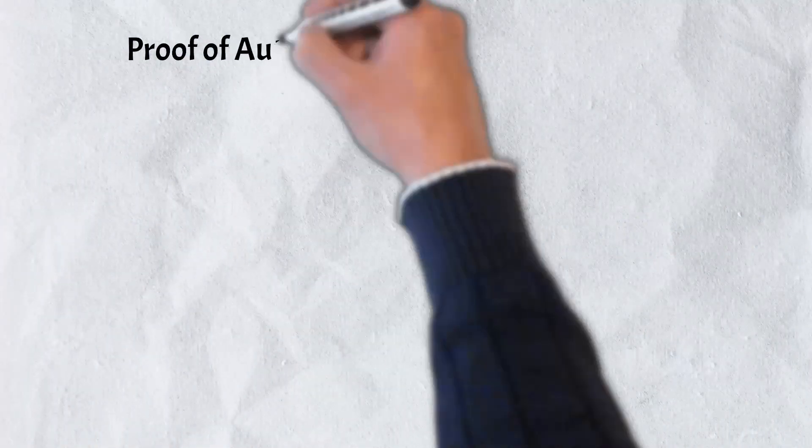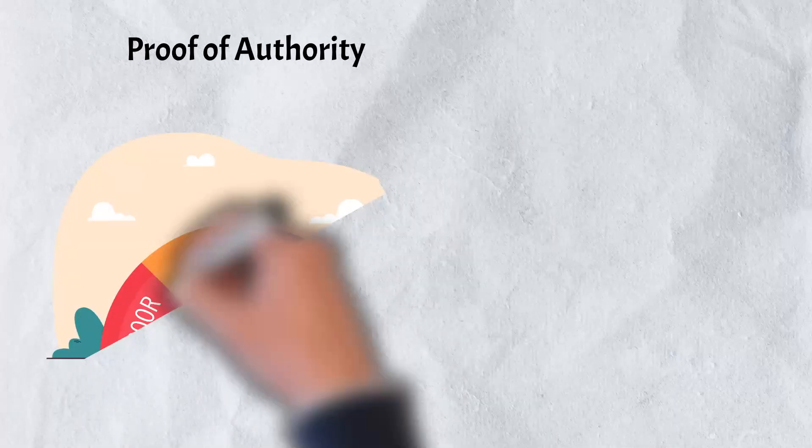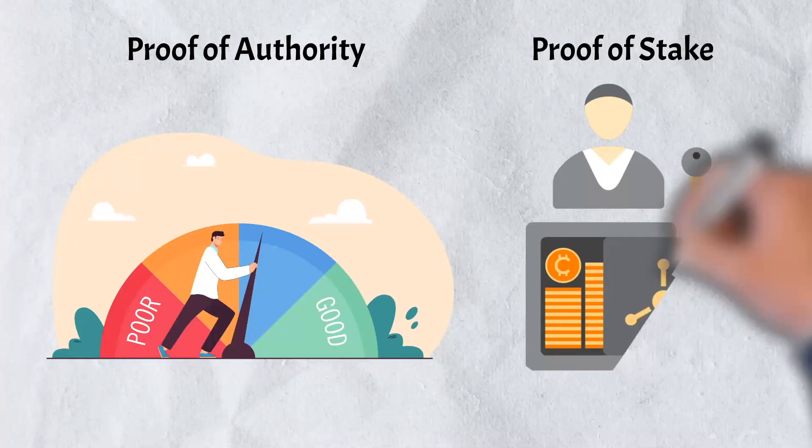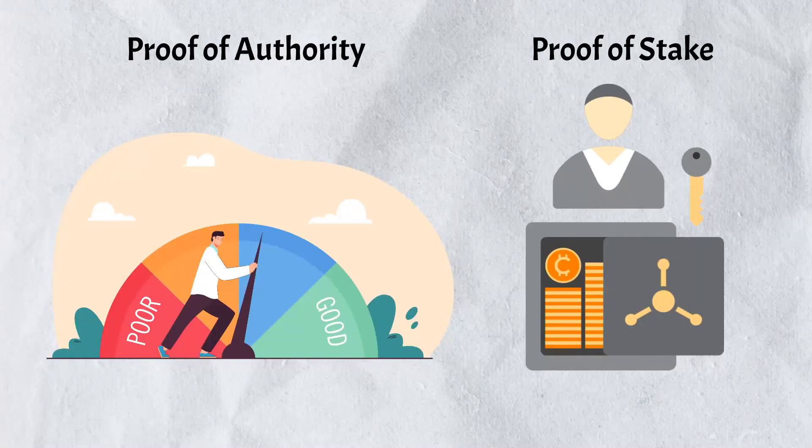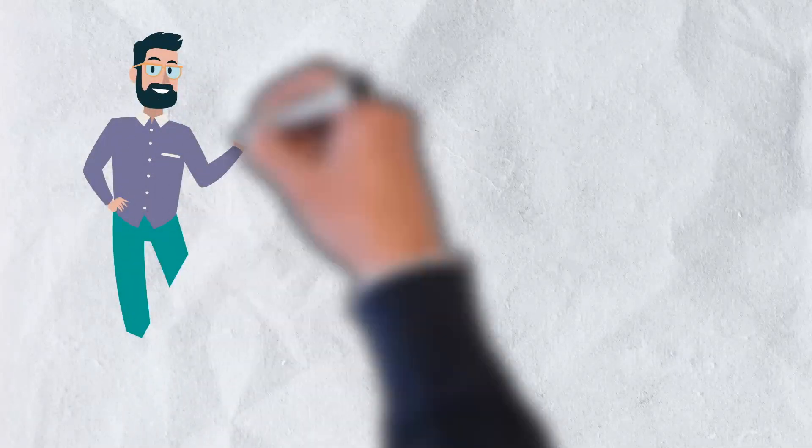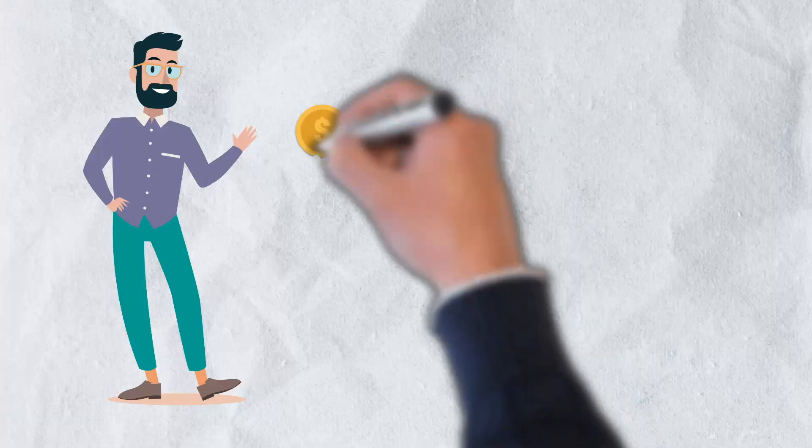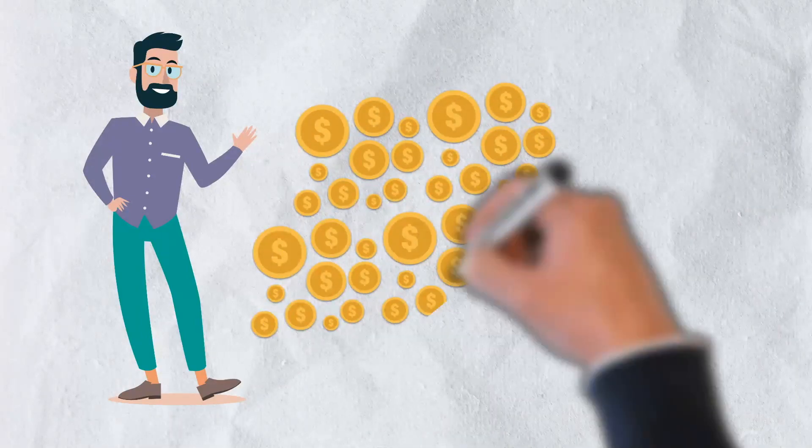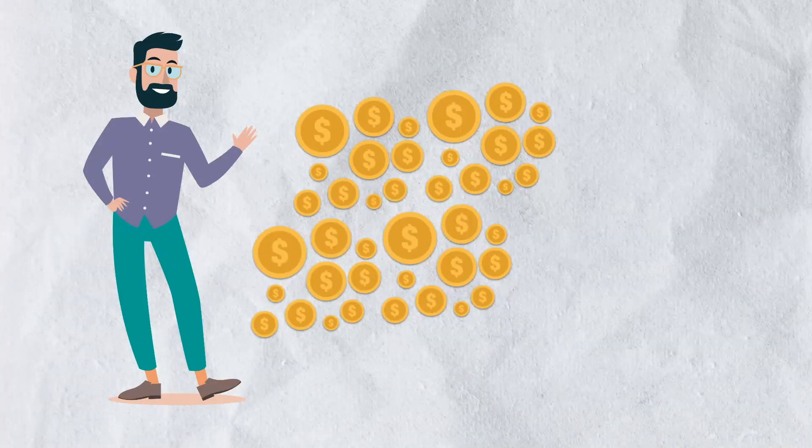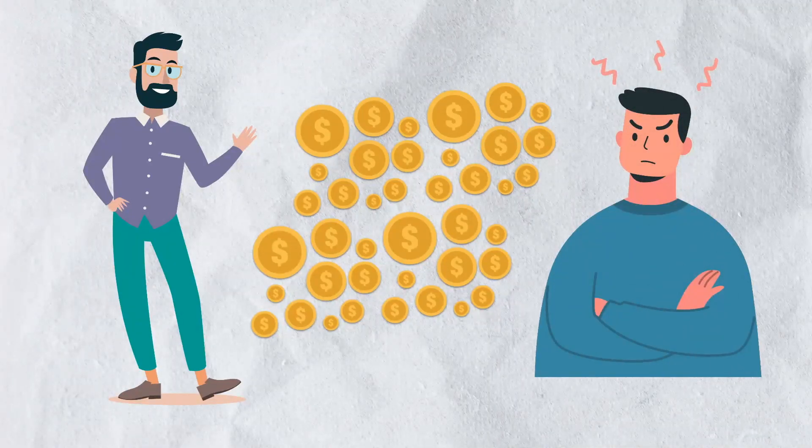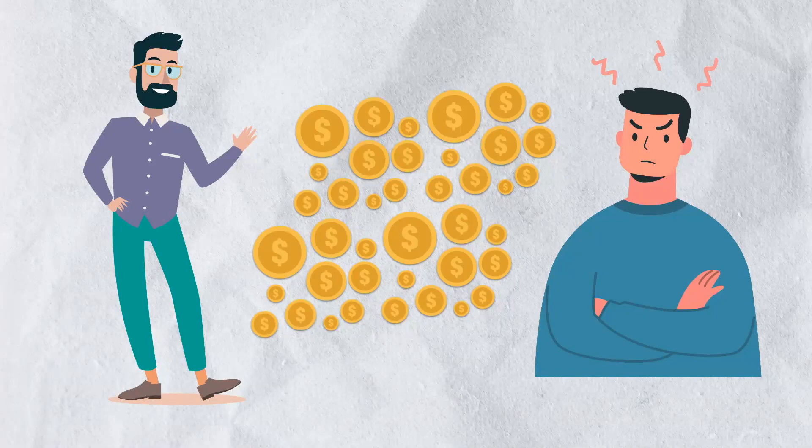Proof-of-authority blockchains require validators to put their social capital on the line, whereas proof-of-stake blockchains demand validators to put their financial capital on the line to ensure acceptable acts. However, in addition to staking their reputation, several proof-of-authority blockchains demand prospective network validators to invest considerably in the network financially. This allows the network to weed out would-be validators with ambiguous or shady motivations while monetarily rewarding honest nodes that are prepared to commit for the long haul.